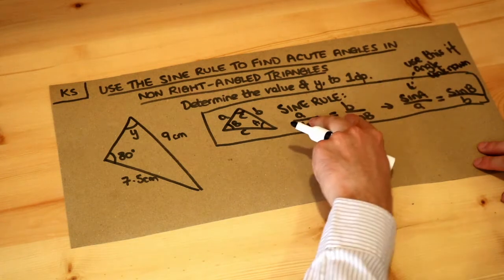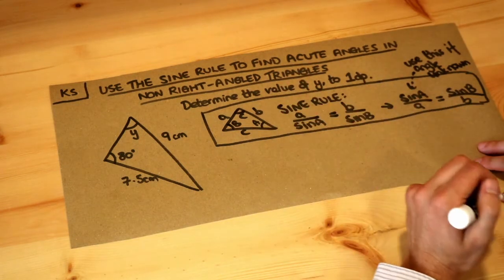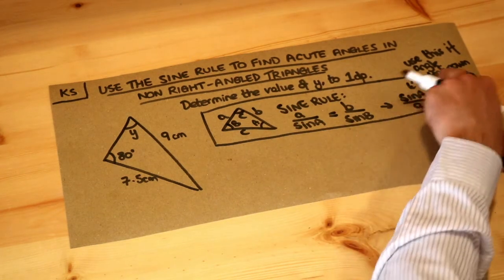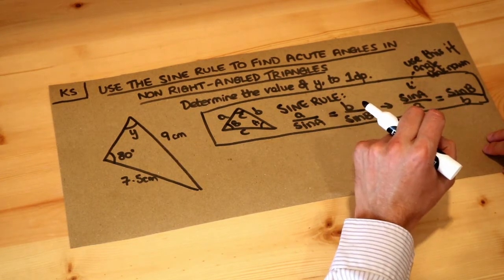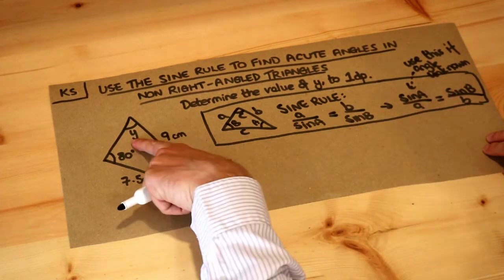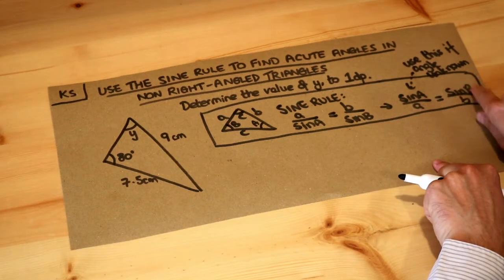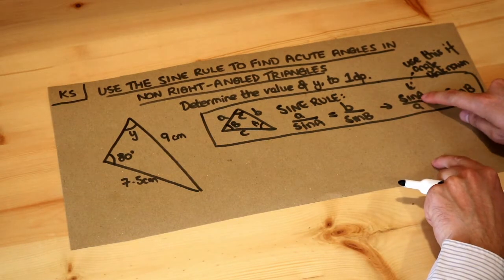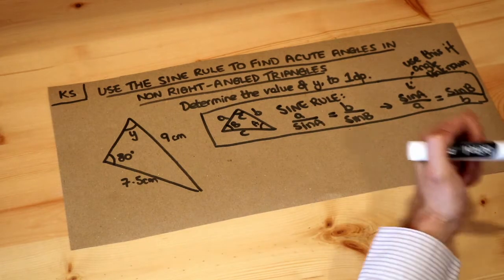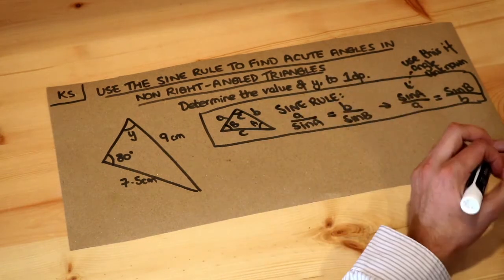So we use this formula if the angle is unknown, and if it was a side that was unknown we use the first form like we did in the previous video. The reason we're using this other form is it's just easier to solve your equation if the unknown, in this case the angle, will be at the top of your fraction rather than the bottom, and it just makes it a bit easier to solve.